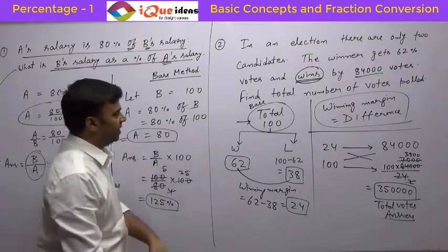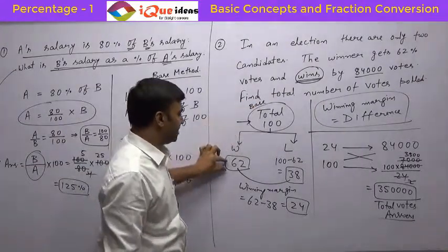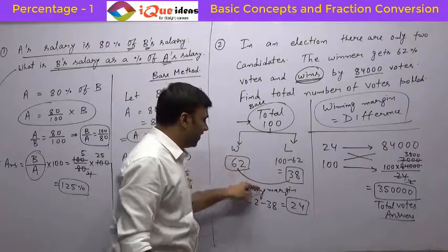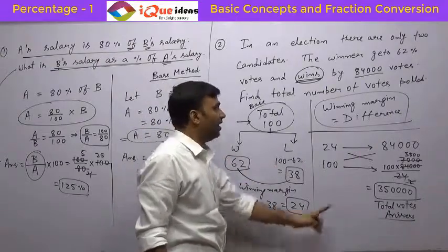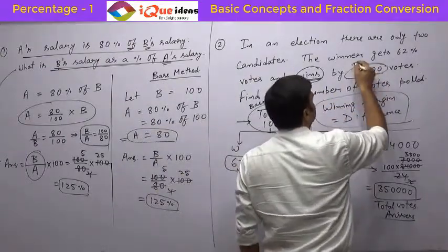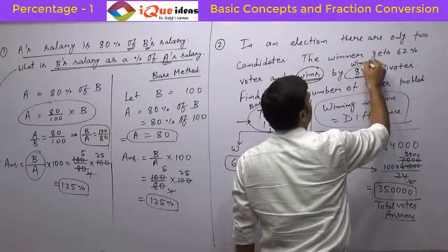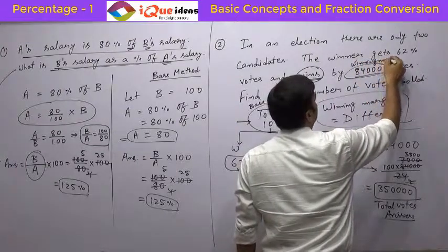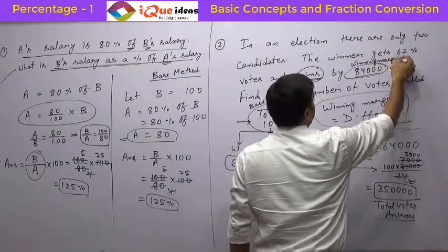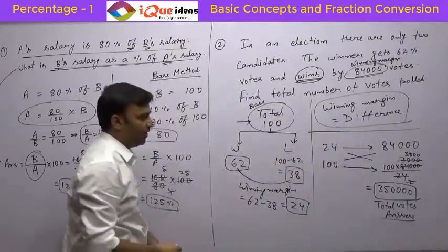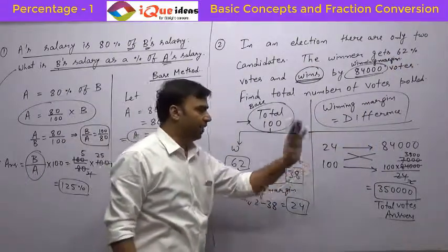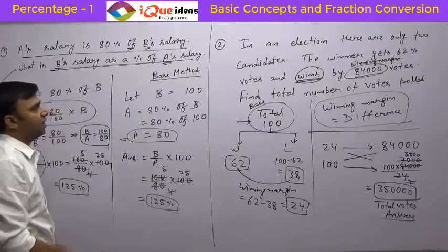So very carefully, we assume the total votes to be 100, winner must get 62, loser must get 38. The difference of them is the winning margin, that is 24. In this case, the winning margin is given as, actual winning margin is given as 84,000. So what we did was, we used unitary method calculation. That is, this 24 is equivalent to 84,000, how much will 100 be equivalent to? So this was a good question.